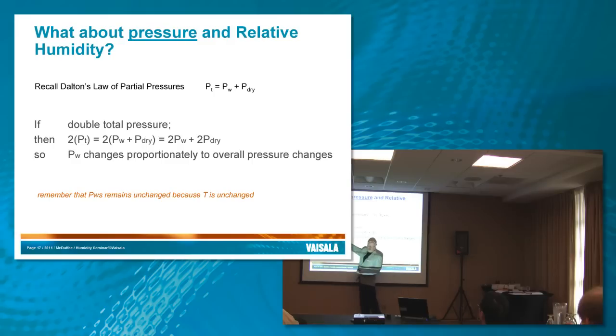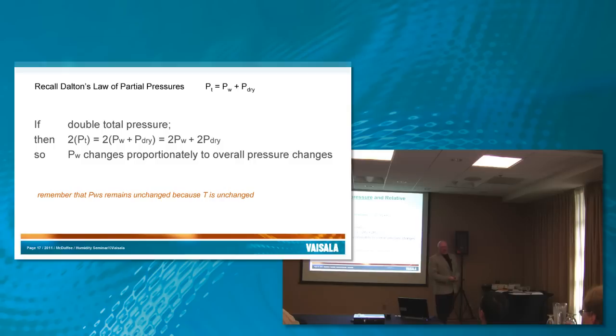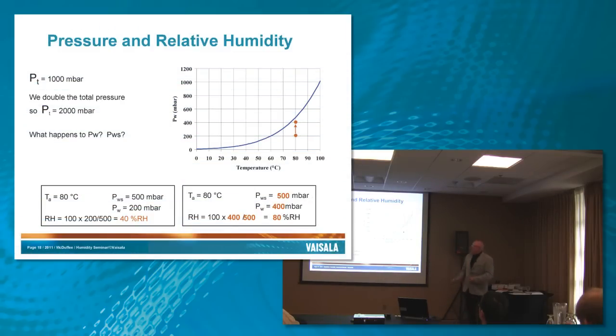So if we look at it mathematically, say for example, we double the pressure. We double the total pressure, that means each of the gases pressure also doubles. So PW will increase. It changes proportionately. So say we have a point here where 200 millibars for PW, 500 for PWS, and 40% RH. We're going to double the pressure of this system from 1,000 millibars to 2,000 millibars.